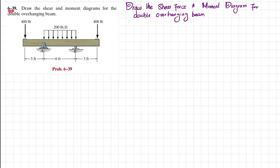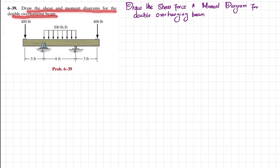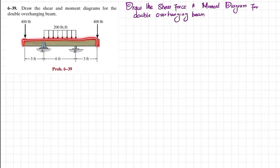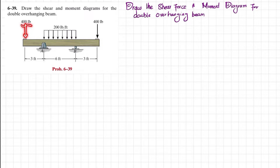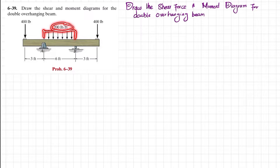Welcome back - problem 6-39. The statement is to draw the shear and bending moment diagrams for the double overhanging beam. From the figure you can see this is a double overhanging beam with a point load at both ends and a distributed load from A to B that is 200 pounds per feet.